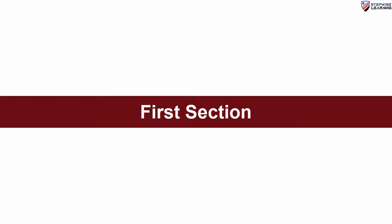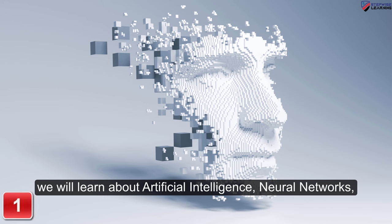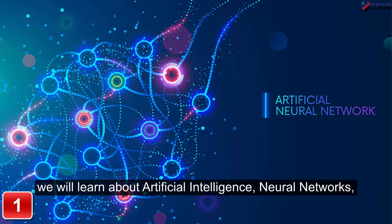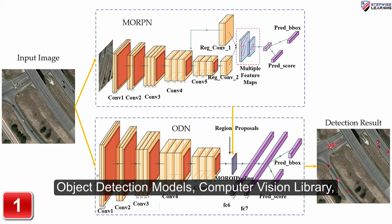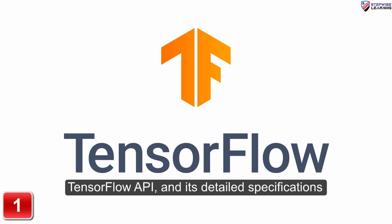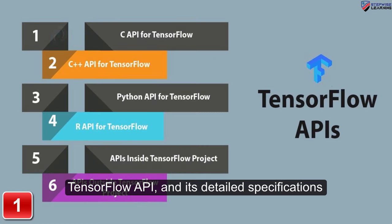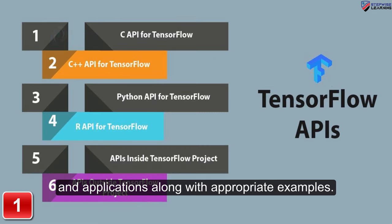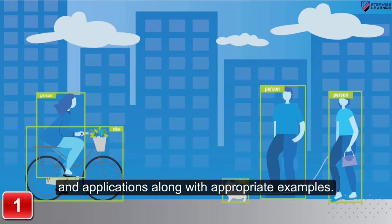In the first section, we will learn about Artificial Intelligence, Neural Networks, Object Detection Models, Computer Vision Library, TensorFlow API and its detailed specifications and applications along with appropriate examples.